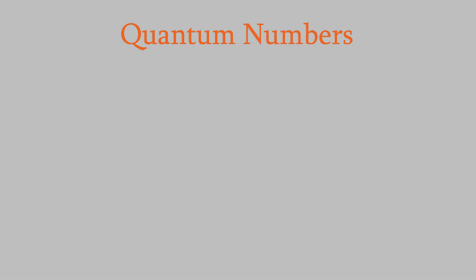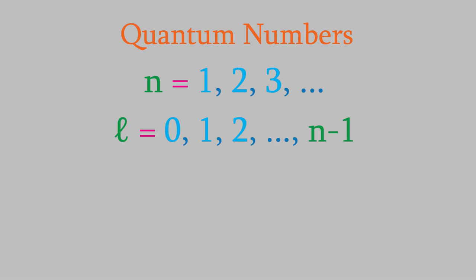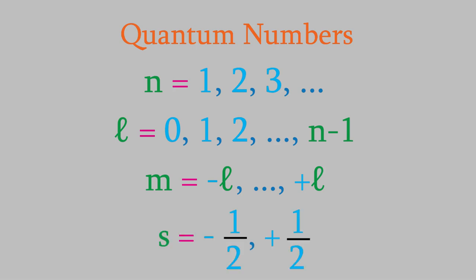The first number is n, which has an integer value of 1 or higher. Next is l, which has an integer value from 0 to n minus 1. The third quantum number is m, which has an integer value from negative l to positive l. And the fourth and final quantum number is s, which always has a value of positive or negative one-half.